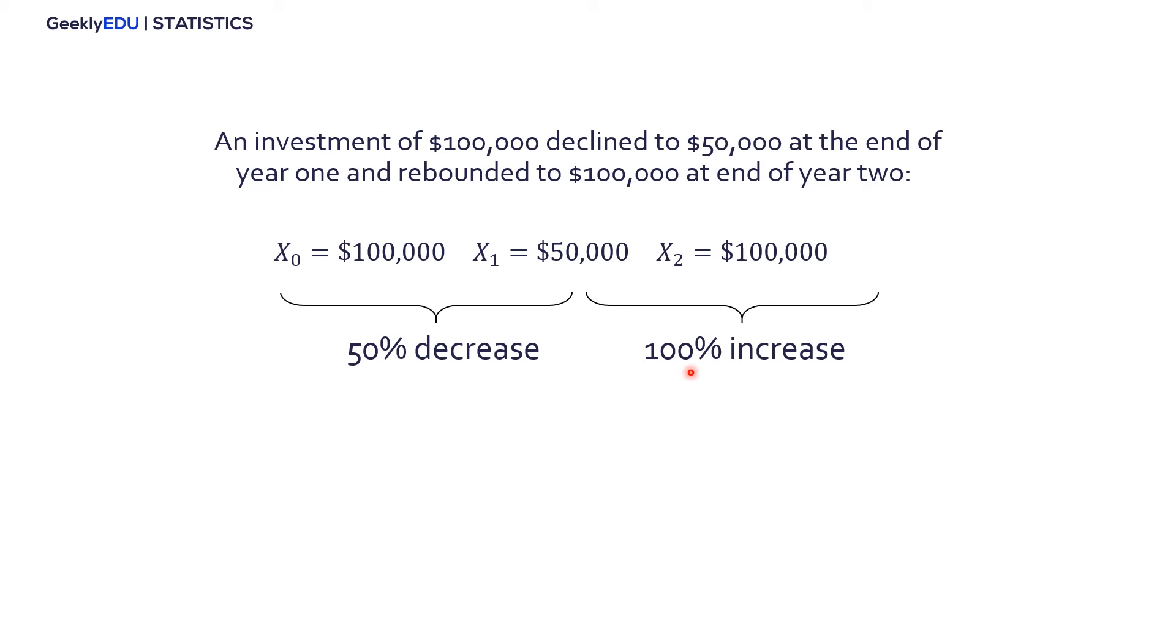Now, this is kind of overcomplicating it because just by looking at it, we notice that this number and this number, or x sub 0 and x sub 2, are equal. So, whenever that happens, that means that the overall two-year return is zero since it started and ended at the same level.